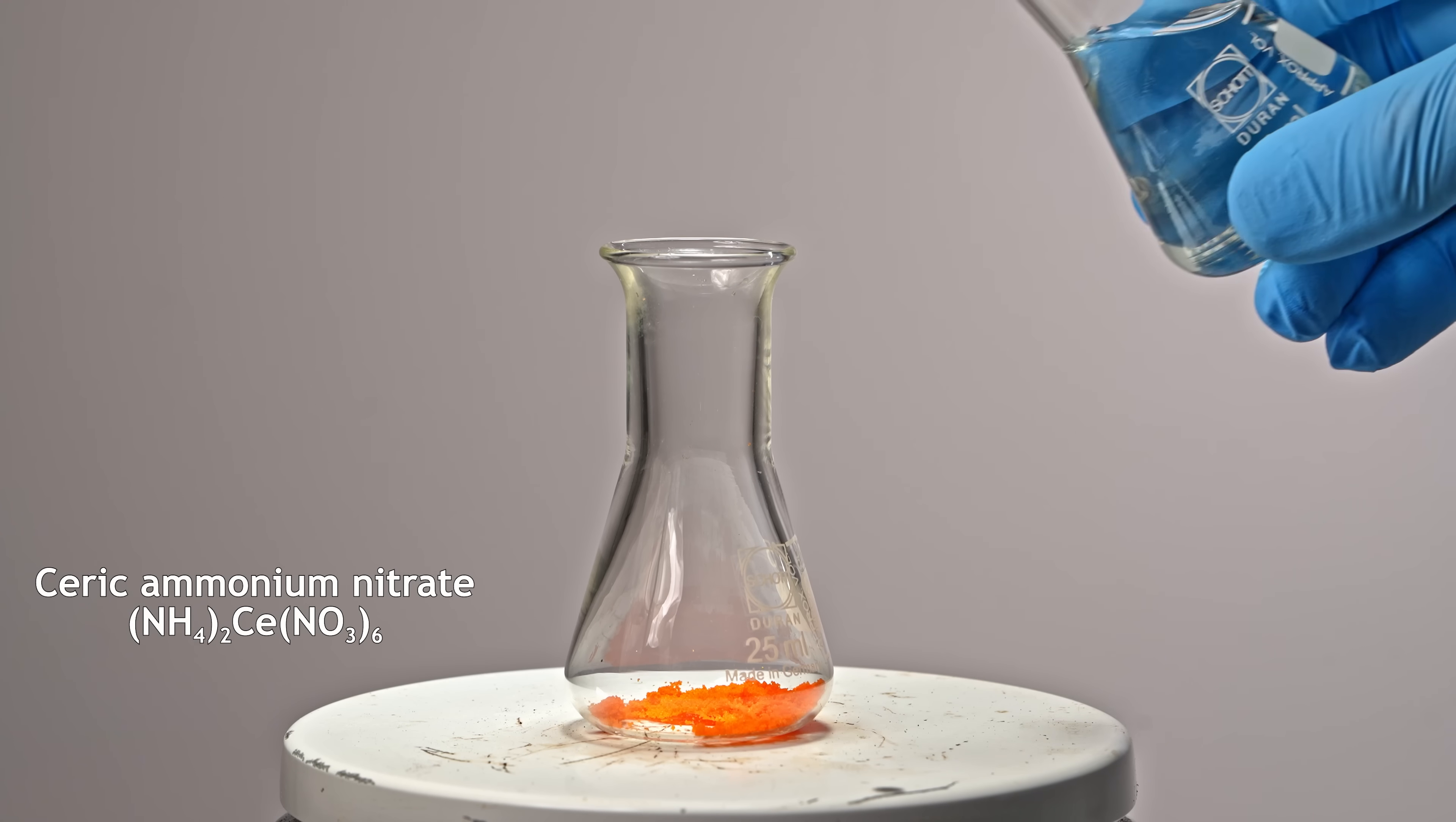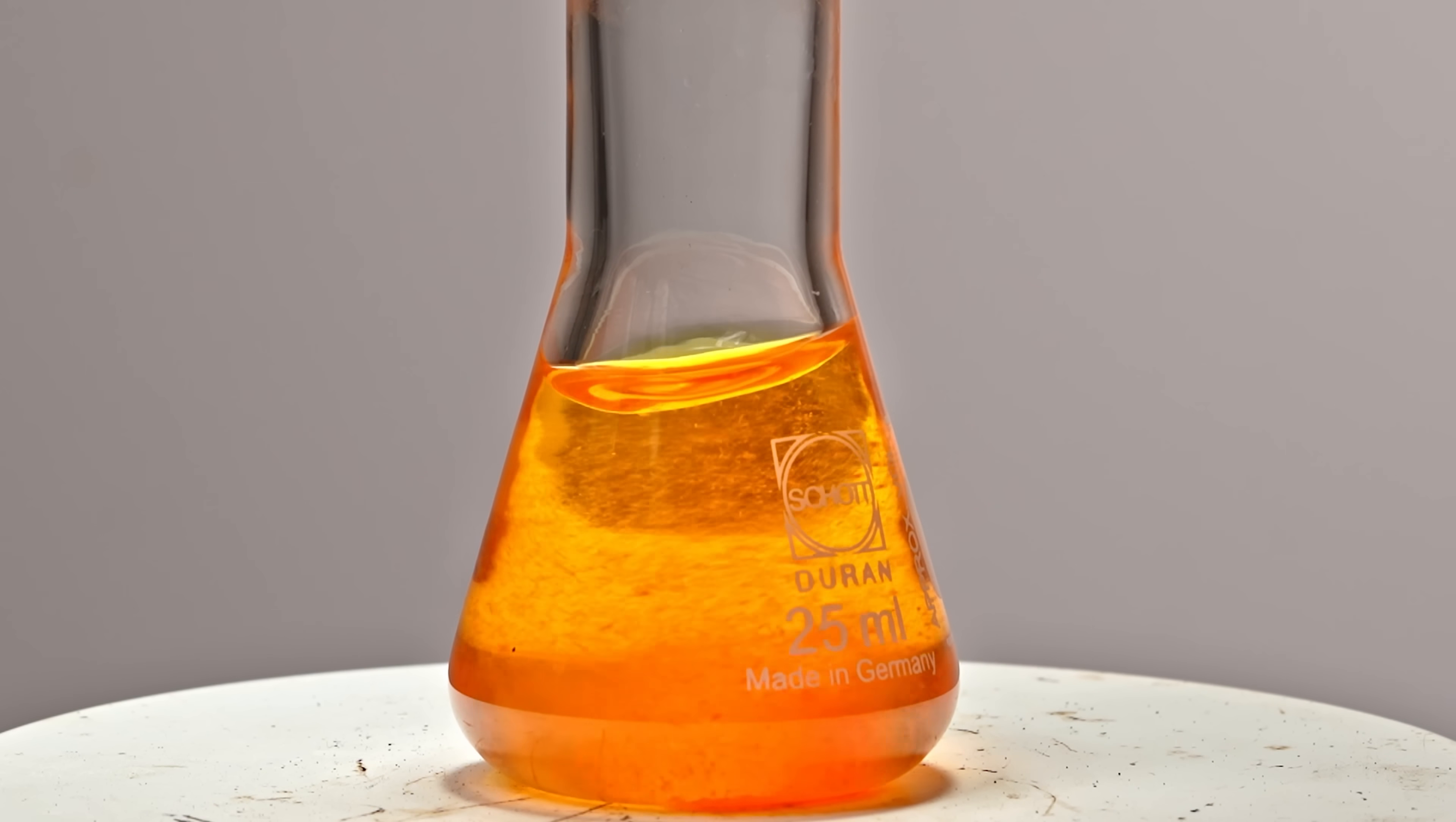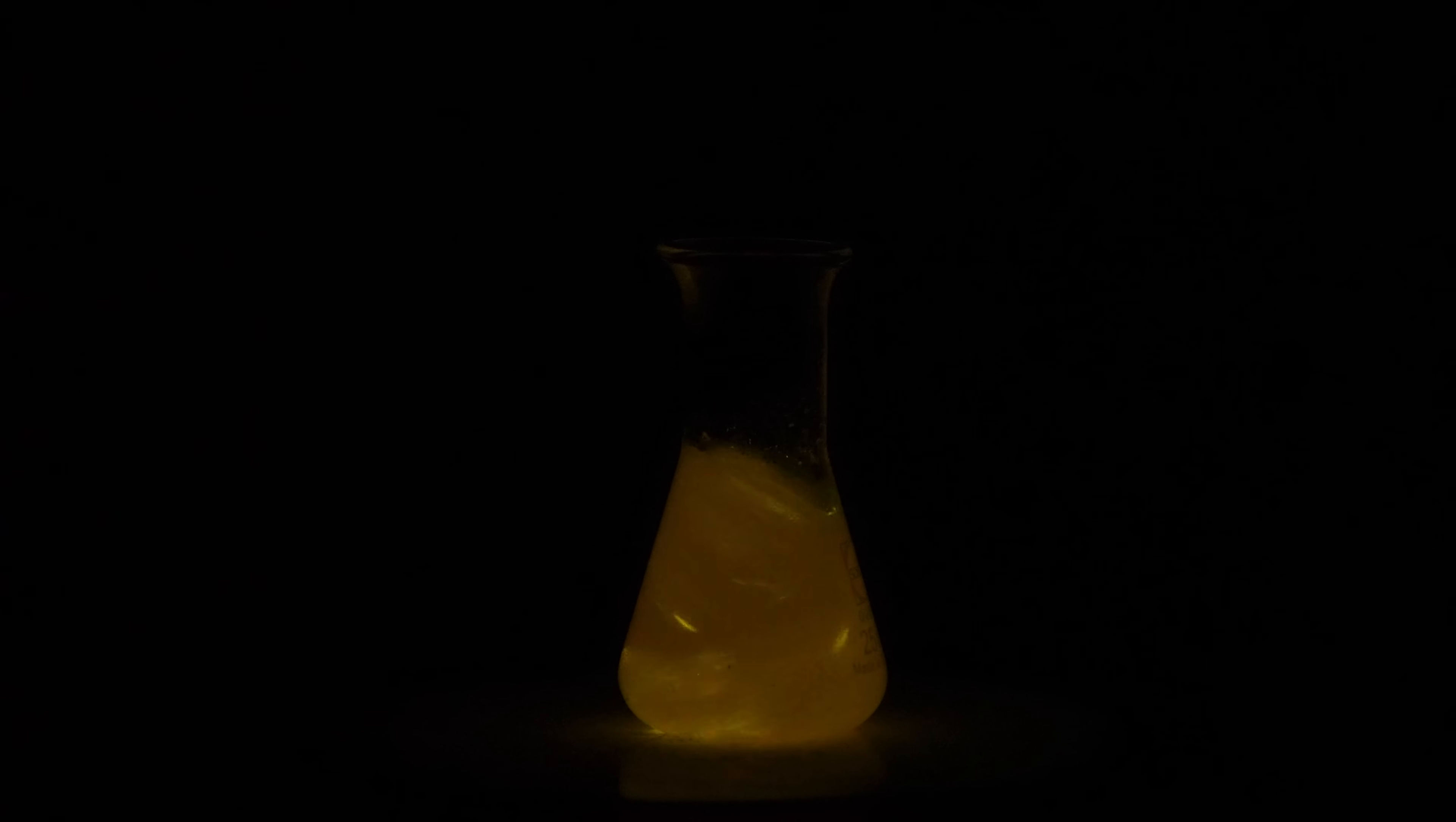One important thing about siloxene. It glows brightly for a short time in acidic solutions, if some metals are present, especially transition metals. In my backstage experiments, the best glow happened with cerium ions 4+. Here I made an acidic solution of ammonium cerium sulfate. Now I'll add siloxene powder in the dark. Look at that. This glowing property is sometimes used in analytical chemistry.